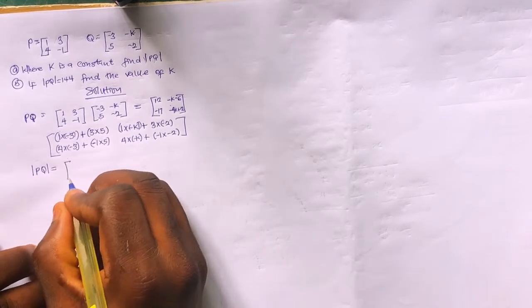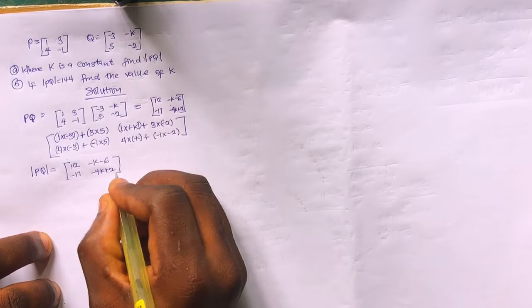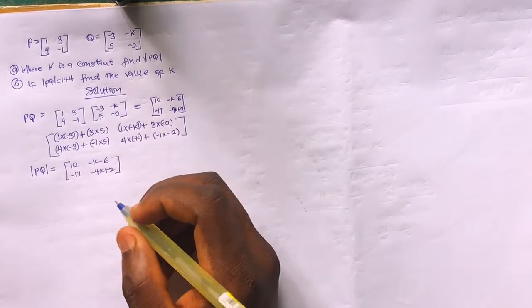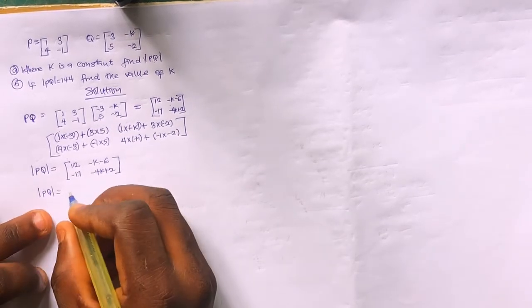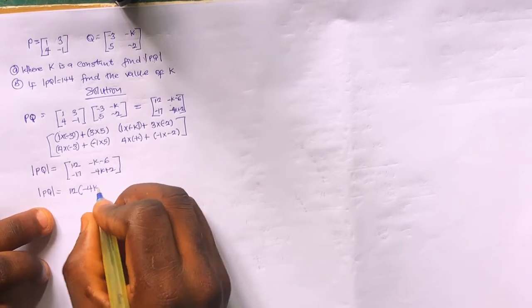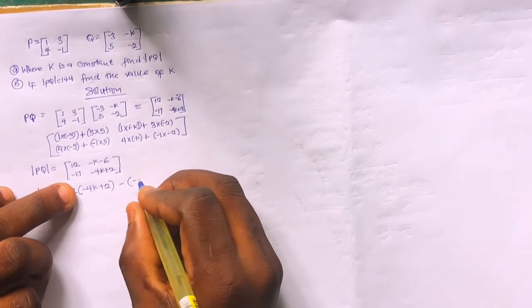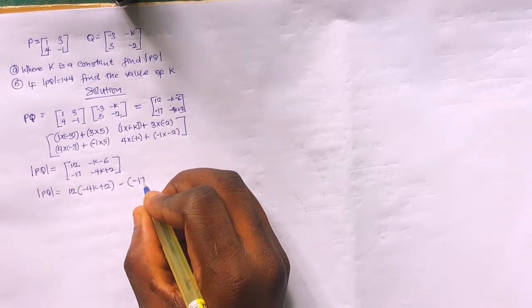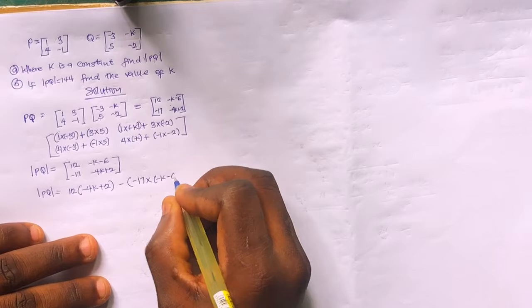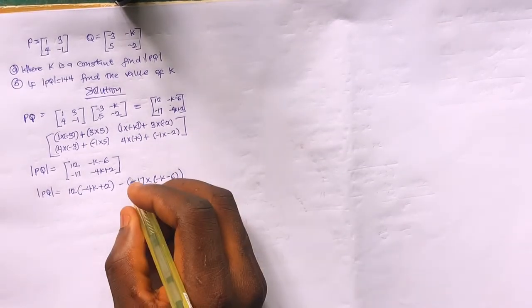Now let's find the determinant of PQ using this result. The matrix PQ has entries: 12, -k minus 6, -17, and -4k plus 2. For a two-by-two matrix, the determinant is (top-left × bottom-right) minus (top-right × bottom-left). So det(PQ) = 12 times (-4k + 2) minus (-17) times (-k - 6).